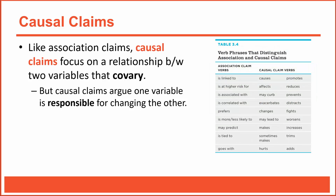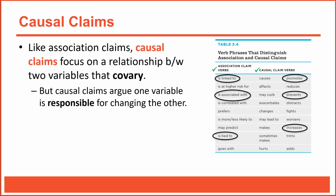As you learn to distinguish between association claims and causal claims, you'll notice that different words tend to be used for each. Association claims focus on words that help you envision relationships or links — for example, exercise is 'linked to' mental health, 'associated with' mental health, or 'tied to' mental health. Causal claims tend to focus on words that are more direct and powerful — for example, exercise 'promotes' mental health, exercise 'prevents' depression, or exercise 'increases' brain chemicals linked to well-being.